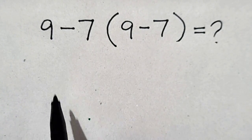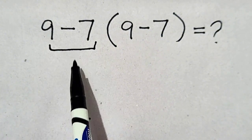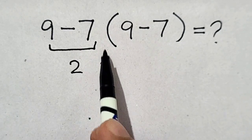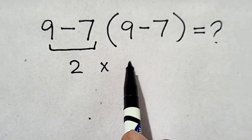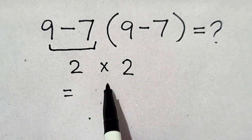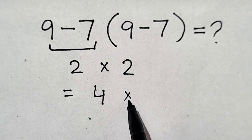Most of the people do it this way. First of all, nine minus seven is equal to two. Times, nine minus seven is equal to two. So, two times two is equal to four is their answer, which is wrong.